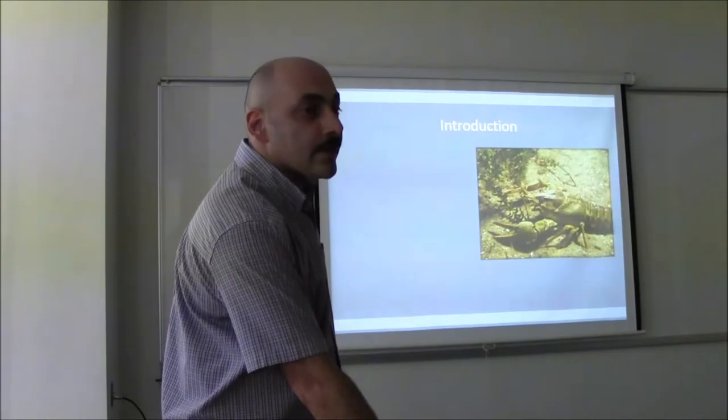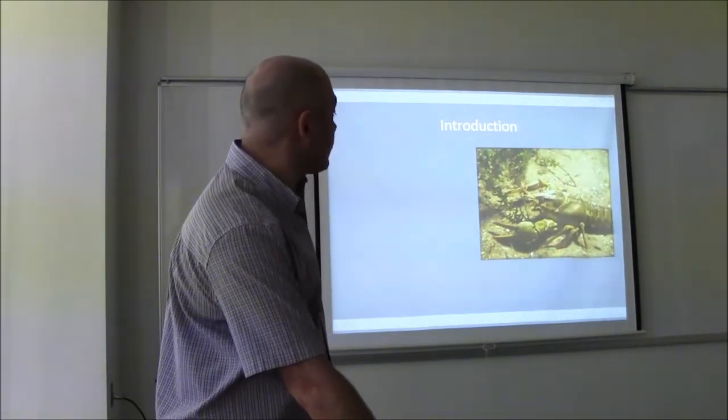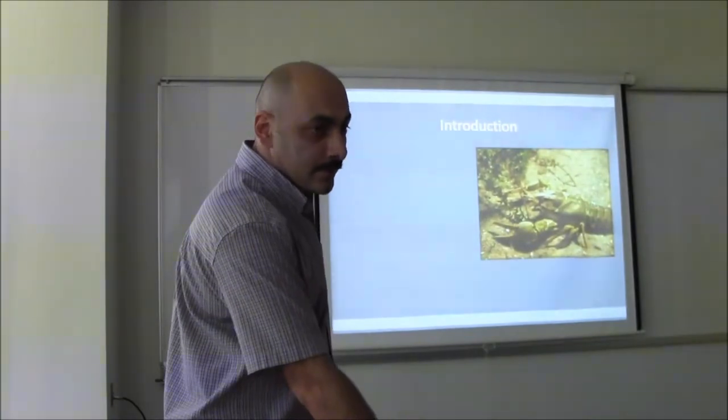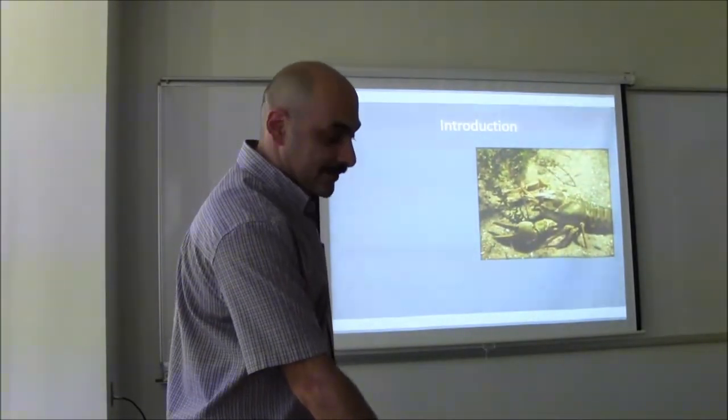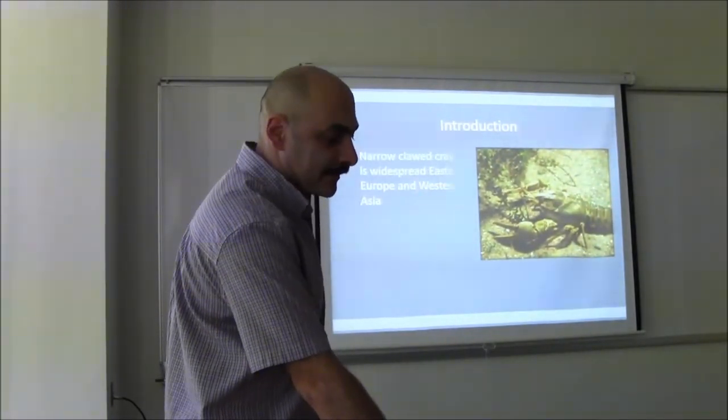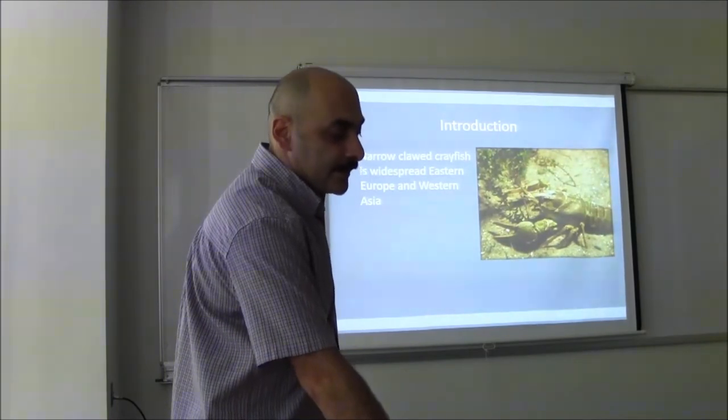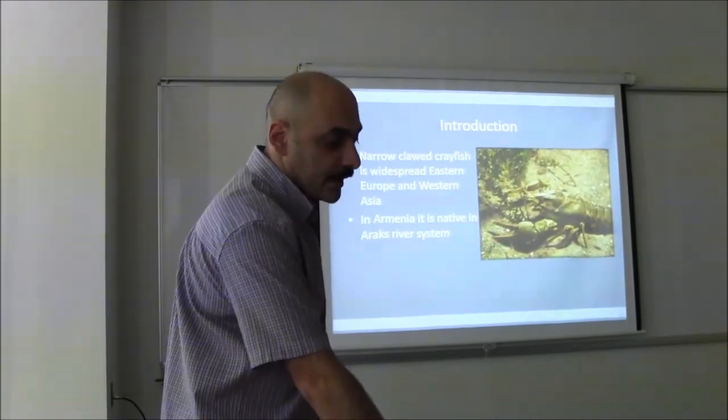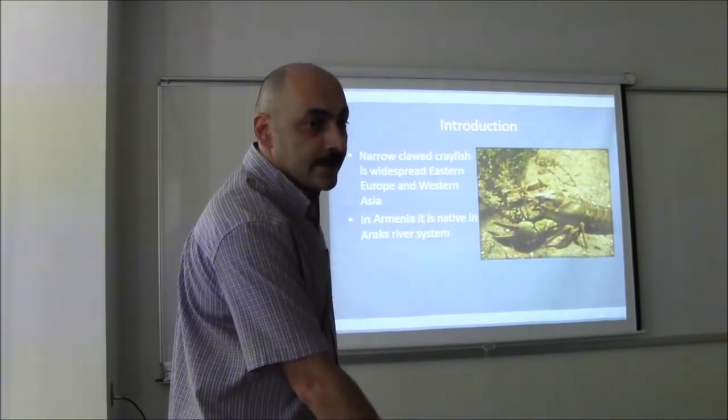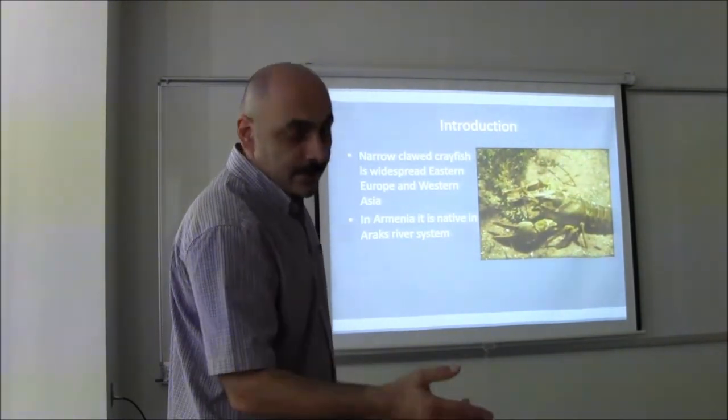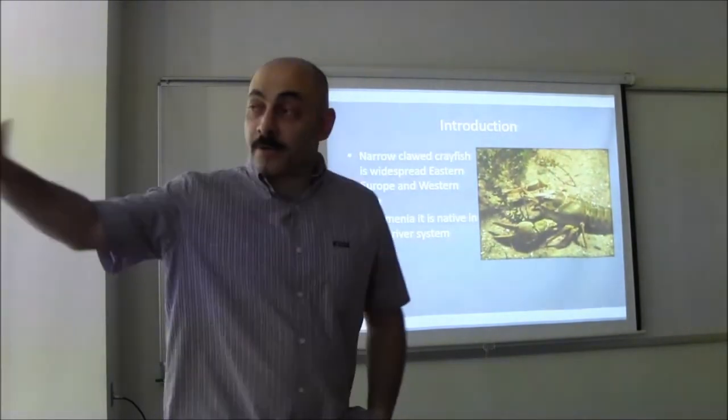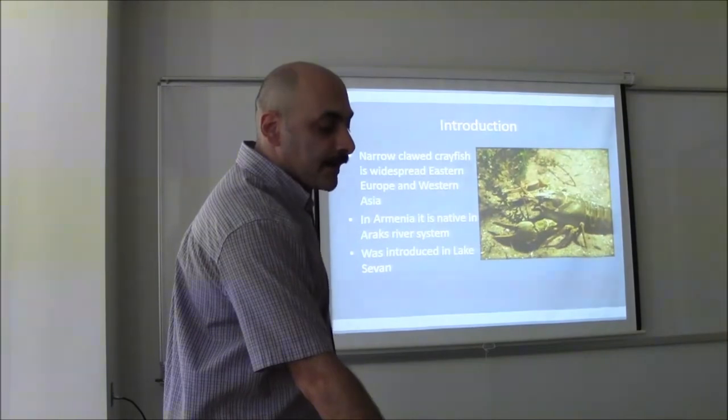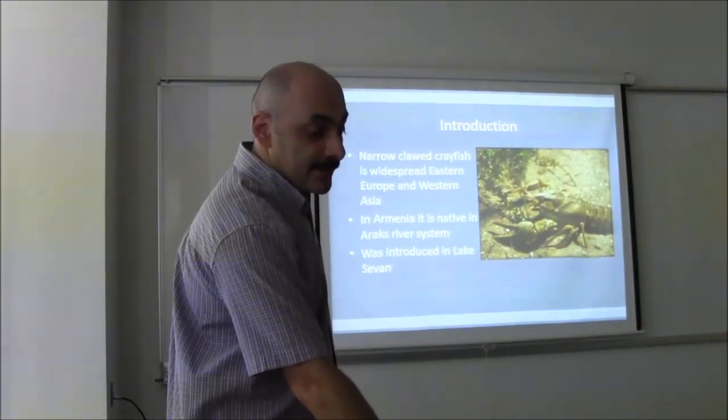So the narrow-clawed crayfish, the animal that you probably well know because at least you ate it. This is widespread in Eastern Europe and Western Asia. It lives in rivers and lakes. In Armenia it is native, so it is not introduced in Arax's river system. It was occasionally introduced in Lake Sevan in the 1980s.